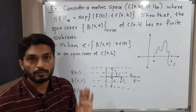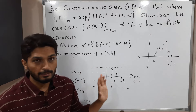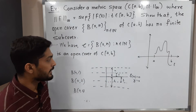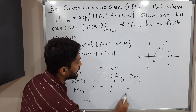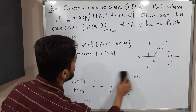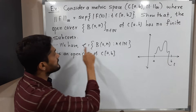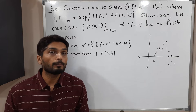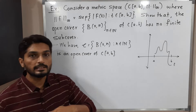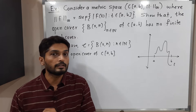We have such infinitely many strips and their collection is an open cover. Every open ball is an open set, so the collection is open, and it covers C[A,B], making it an open cover. We now have to prove it has no finite sub-cover.